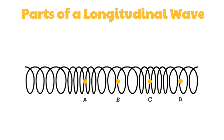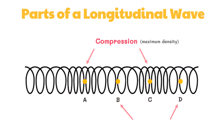In a longitudinal wave, because the coils of the slinky are vibrating longitudinally, there are regions where they become pressed together and other regions where they are spread apart. A region where the coils are pressed together in a small amount of space is known as a compression. A compression is a point on a medium through which a longitudinal wave is traveling that has the maximum density. Points A and C on the diagram represent compressions. A region where the coils are spread apart, thus maximizing the distance between coils, is known as a rarefaction. A rarefaction is a point on a medium through which a longitudinal wave is traveling that has the minimum density. Points B and D represent rarefactions. While a transverse wave has an alternating pattern of crests and troughs, a longitudinal wave has an alternating pattern of compressions and rarefactions.